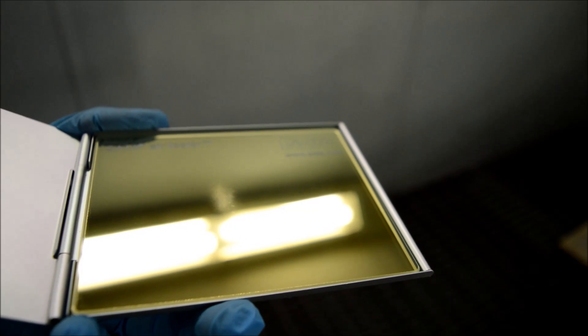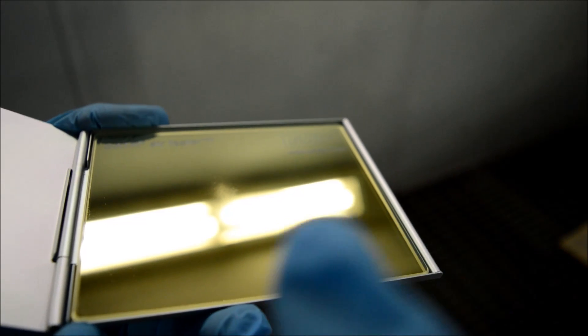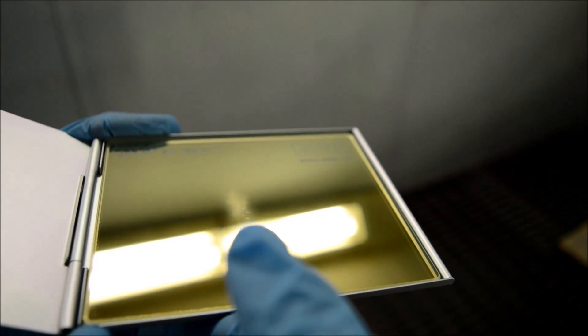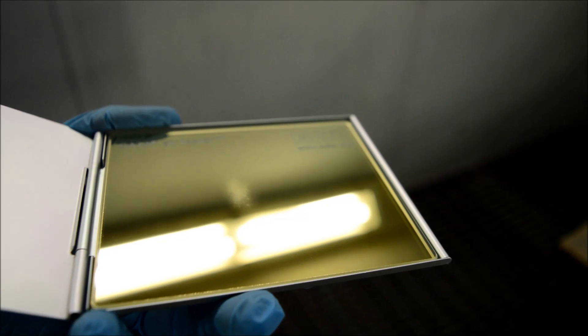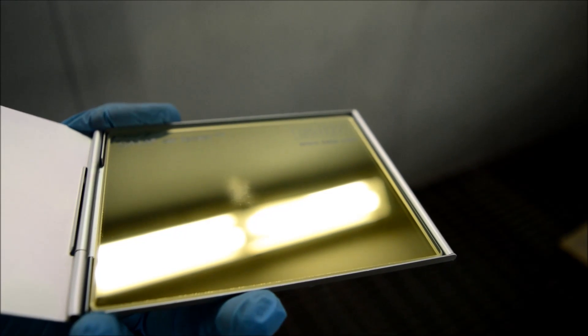We're holding this air tester up to the light now and you can see a faint haze in the middle, just around here. This shows the air test has picked up some form of contamination running through our airlines.